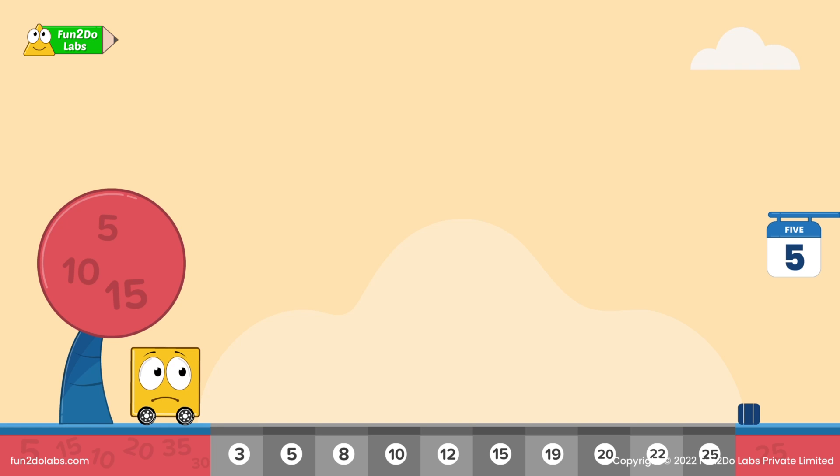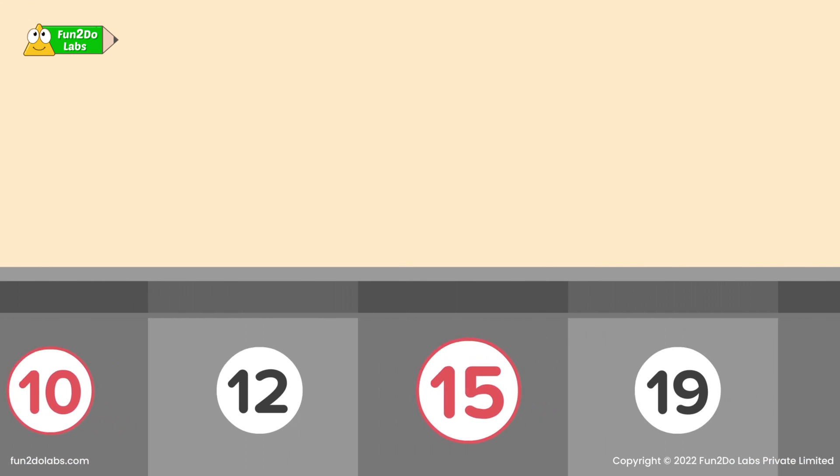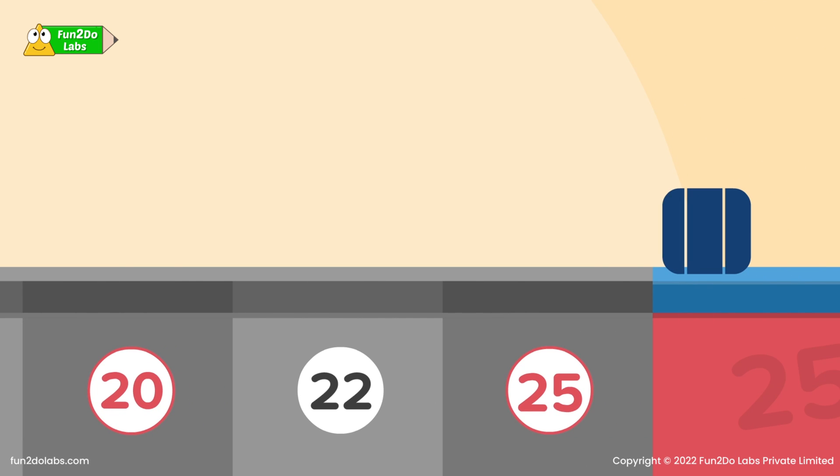Realizing his mistake, he starts looking for clues to cross the pathway. Alright! I need to jump on multiples of 5 to cross the path. 5, 10, 15, 20, 25 are multiples of 5.